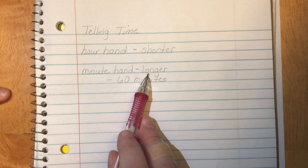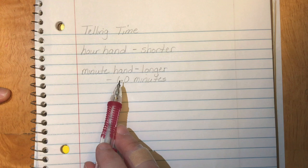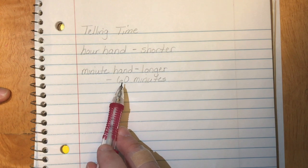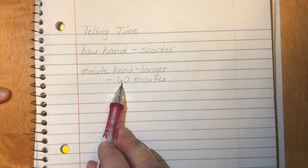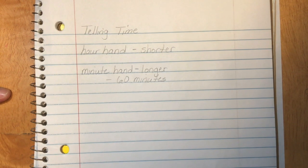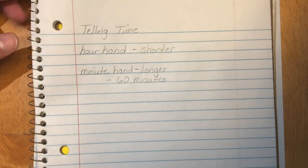The minute hand is the longer one and when we're talking about time in hours there are 60 minutes in one hour. Each of the numbers around the clock is a five minute time span. So let's take a look at some clocks and look at how we can tell the time on them.